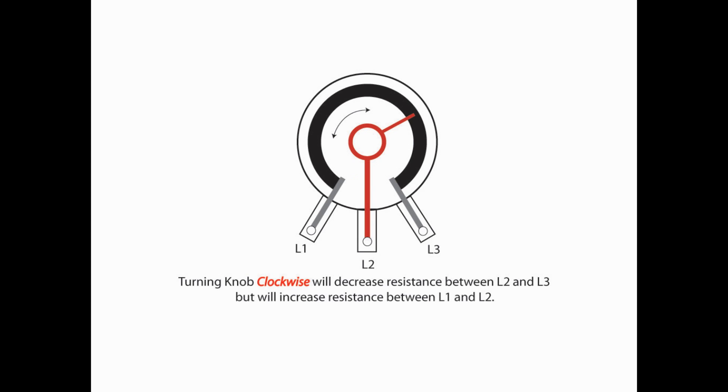Now, turning the knob clockwise is going to decrease the resistance between L2 and L3, but it's going to increase the resistance between L1 and L2. Conversely, turning the knob counterclockwise is going to increase the resistance between L2 and L3, but will decrease the resistance between L1 and L2. So again, remember, no matter how you turn that knob, your resistance between L1 and L3 is the same.